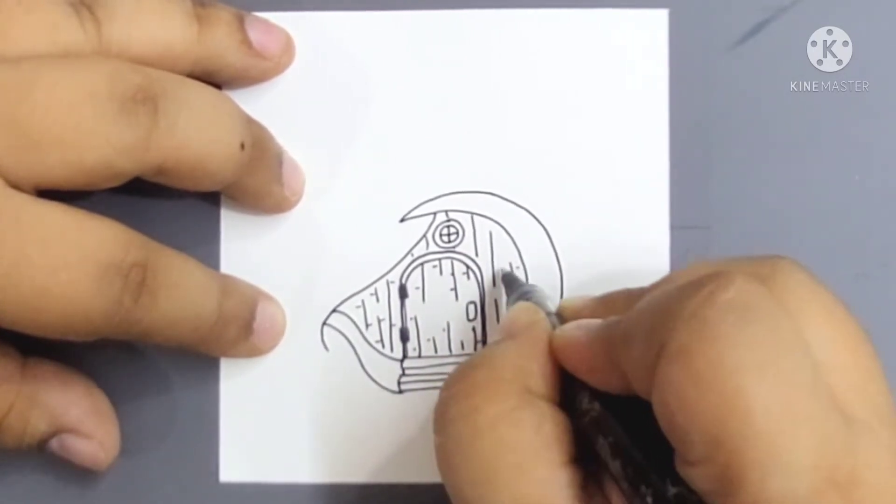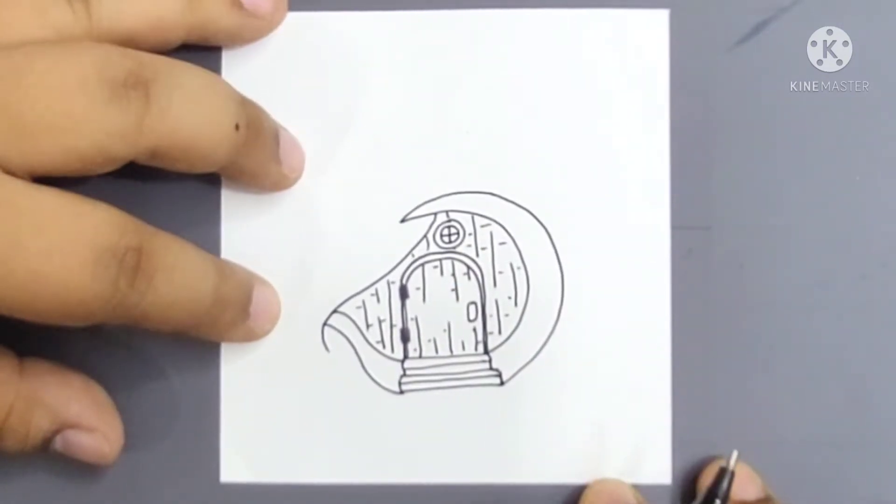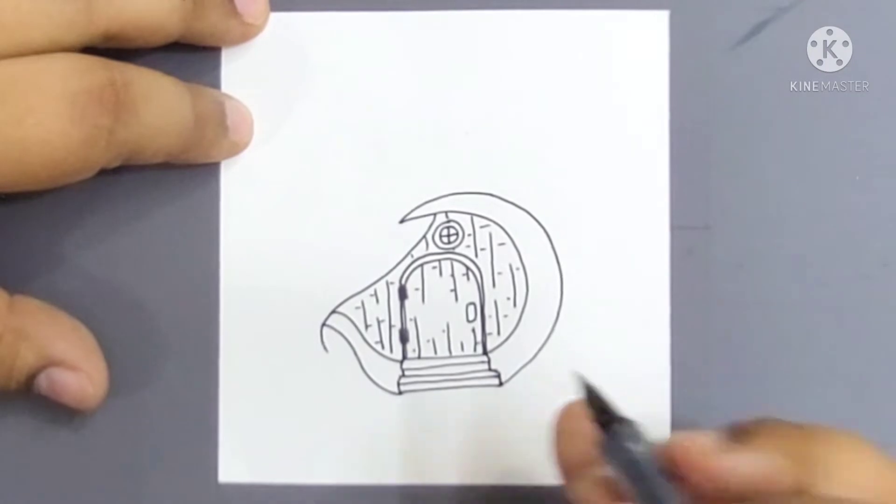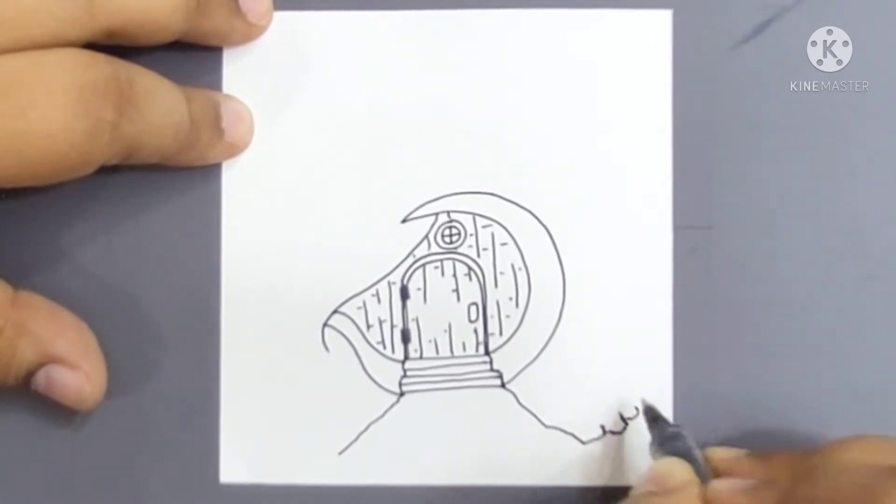So I first gave in the details of the door. I'm using a normal black gel pen over here and I started with the steps and the frame of the door along with a small window.